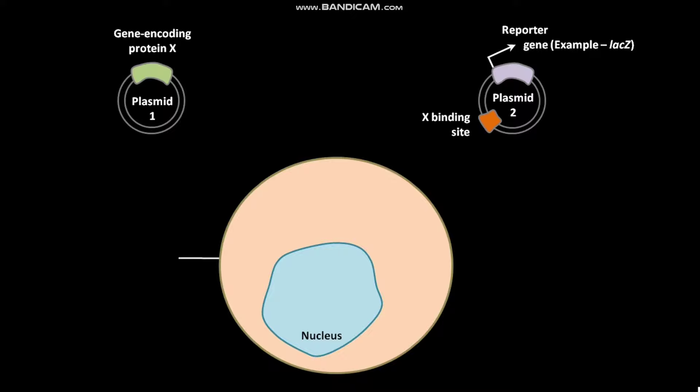Plasmid 2 also contains one or more X binding sites. This is a cell that does not have the gene encoding protein X.